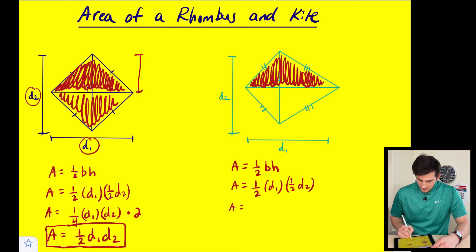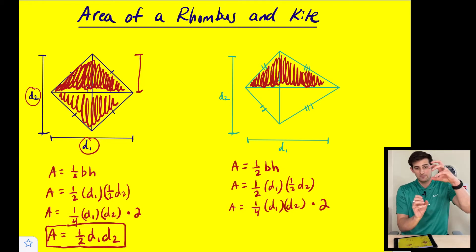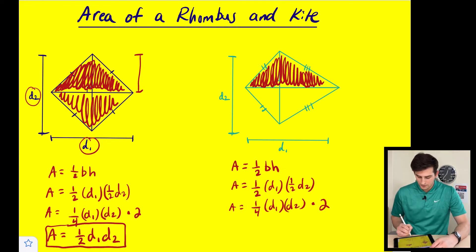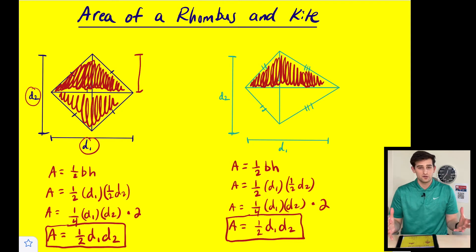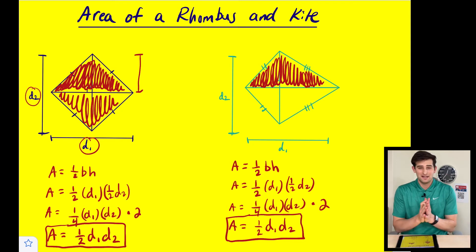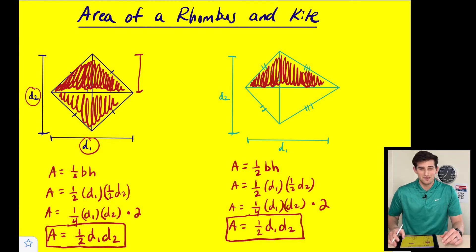We simplify that to one fourth times diagonal one times diagonal two, and once again to make our full kite we have two of these triangles, so we multiply by two. One fourth times two gives us one half times diagonal number one times diagonal number two. So there's our formula — to find the area of a rhombus and a kite, multiply the diagonals together and then multiply by one half, or divide by two.